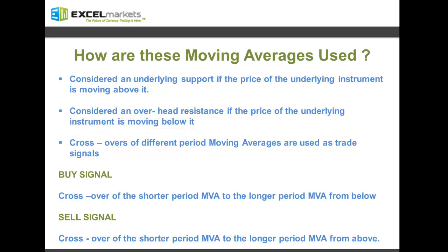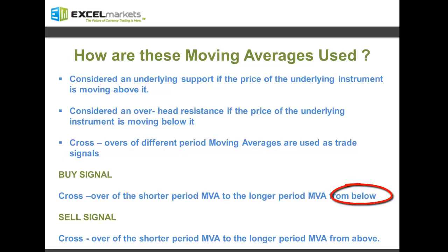Crossovers of different period moving averages are often used as trade signals. A crossover of a shorter period moving average, also known as a faster moving average, to a longer period moving average from below is considered as a buy signal, while a crossover of a shorter period moving average over the longer period moving average from above is considered as a sell signal.